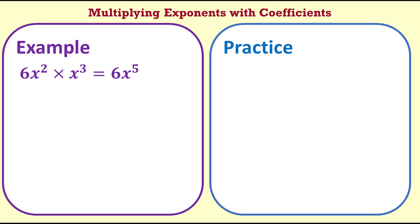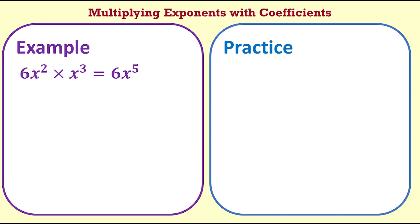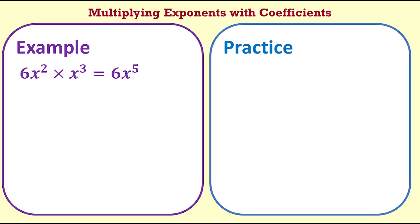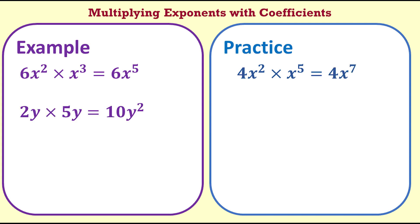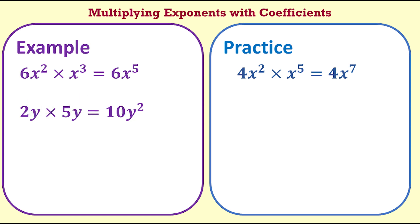Example set 4: multiplying exponents with coefficients. 6x to the 2 times x to the 3: we multiply the coefficients, 6 times 1 which is 6. They have the same base x so we add the exponents, 2 plus 3 equals 5. The answer is 6x to the 5. 4x to the 2 times x to the 5 equals 4x to the 7. 2y times 5y equals 10y to the 2 — where there are no exponents that means an exponent of 1, so we get y to the 2. 3y times 4y equals 12y to the 2.